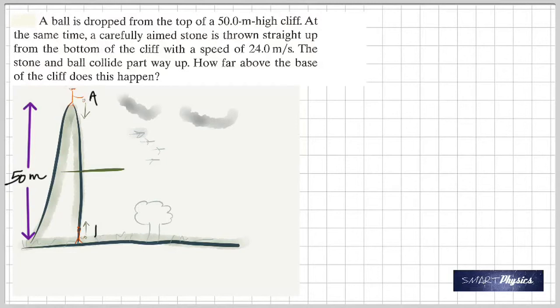A ball is dropped from the top of a 50.0 meter high cliff. At the same time, from the bottom of the cliff, a stone is thrown up at 24 meters per second. The ball is dropped from here and the stone is thrown up from here at 24 meters per second. The stone and the ball collide part way up.